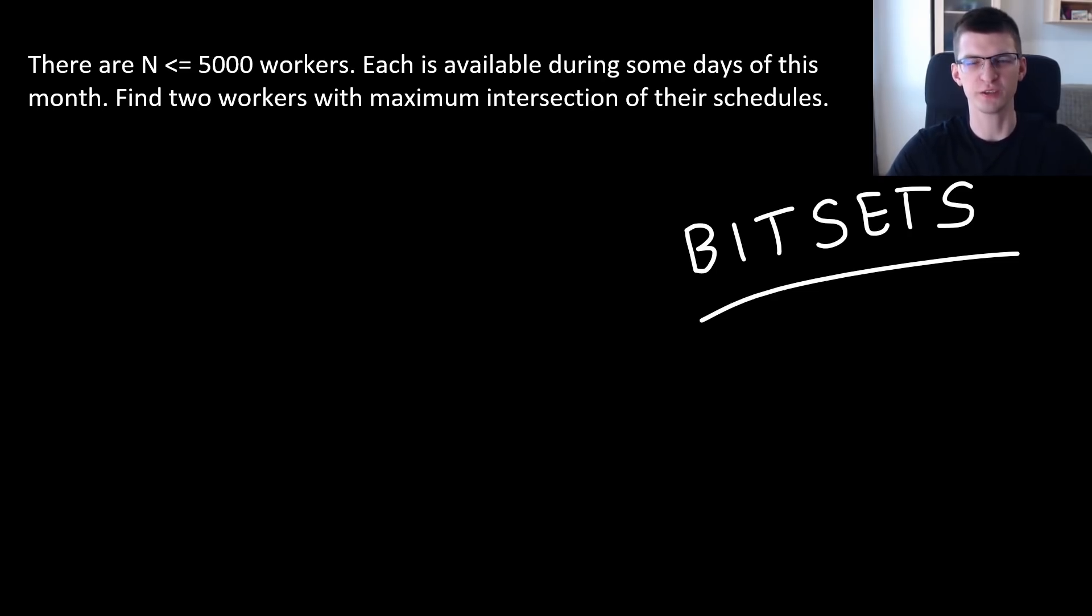Let's say you hire N workers. For each of them you know their schedule for a month - for example, they are available on second, fifth, and sixth day of a month. You need to find two workers to assign some project to them and their intersection of schedules should be as big as possible - days when they are both at work.